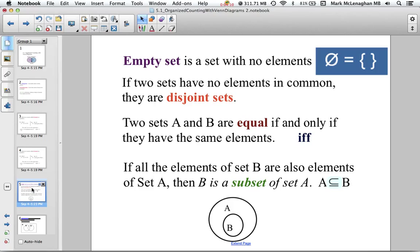If all the elements of set B are also elements of set A, then B is a subset of set A, shown here with the C-shaped symbol with the line underneath it. There's also a diagram there, with A being the large set and B being inside the smaller side.